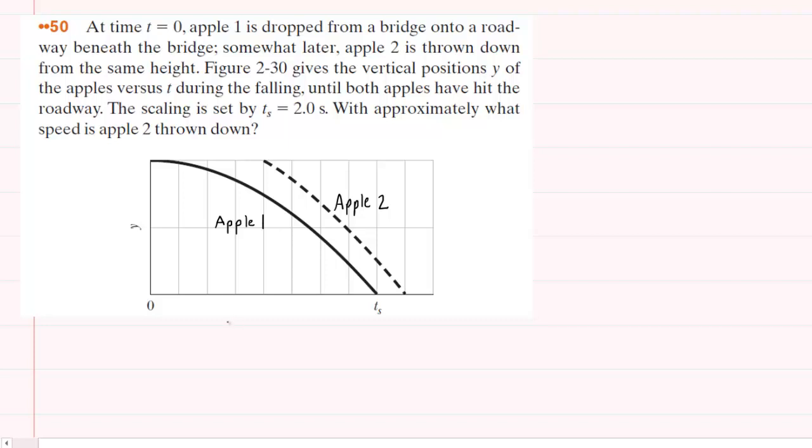We'll begin solving this question by looking at the graph for Apple I and trying to write down all of the known information that we can. Now we know that Apple I is dropped, so we can certainly say that the initial velocity of this apple is 0 meters per second.